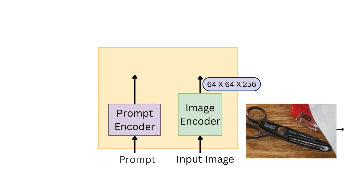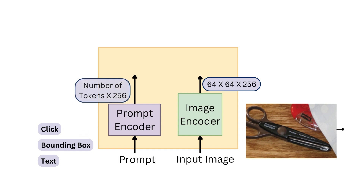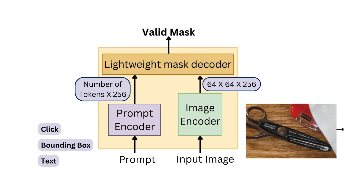Next in line is the prompt encoder, a crucial player in translating prompts — be they in the form of clicks, bounding boxes, or text — into a list of vector embeddings. The real magic unfolds at the mask decoder layer, where the image embeddings and prompt embeddings seamlessly merge.